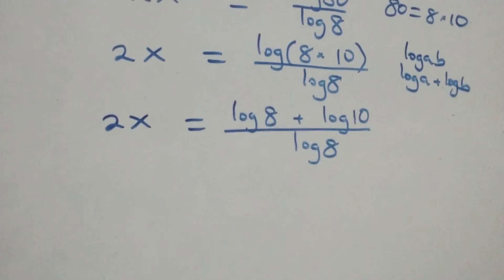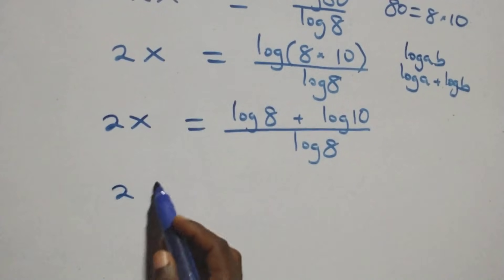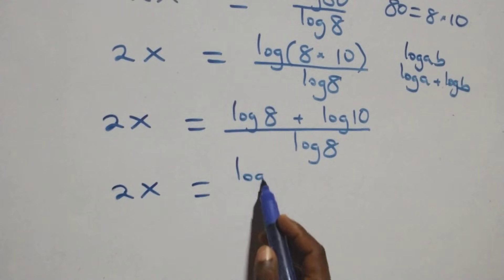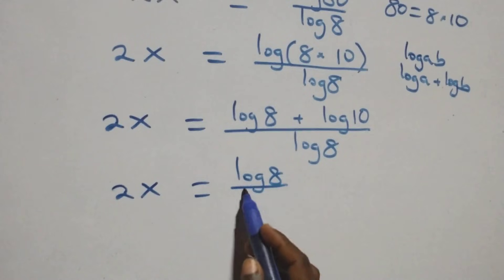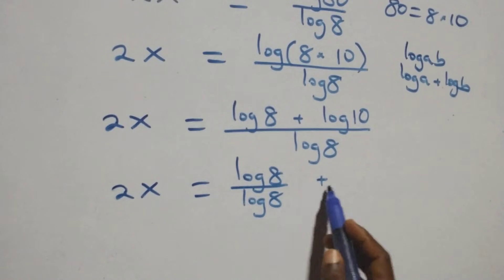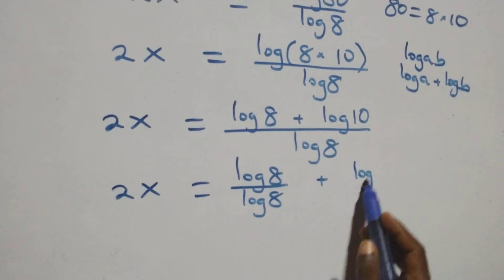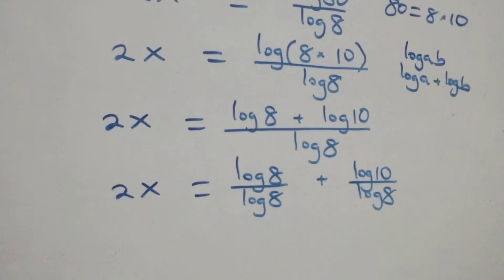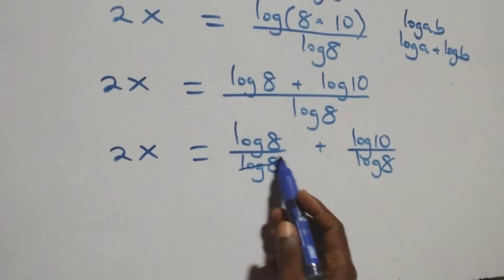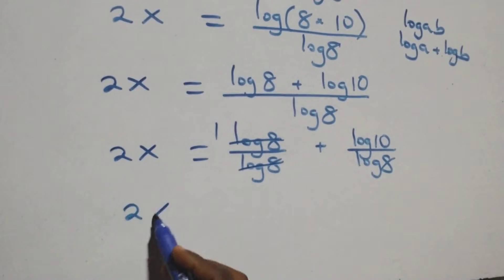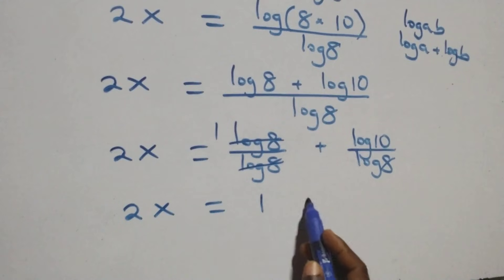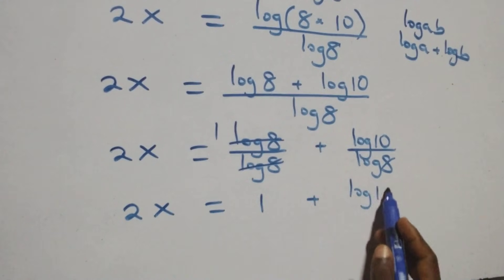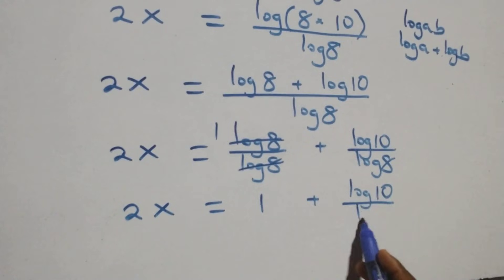We separate this into two fractions and have 2x equals log 8 over log 8, plus log 10 over log 8. Which implies log 8 cancels each other, leaving one. So 2x equals 1 plus log 10 over log 8.